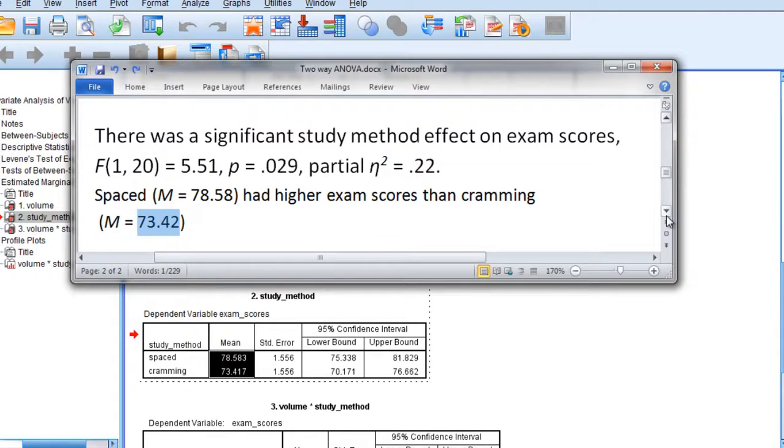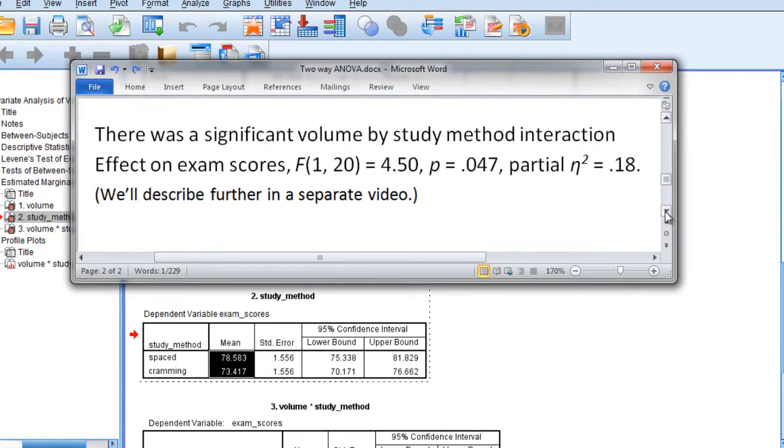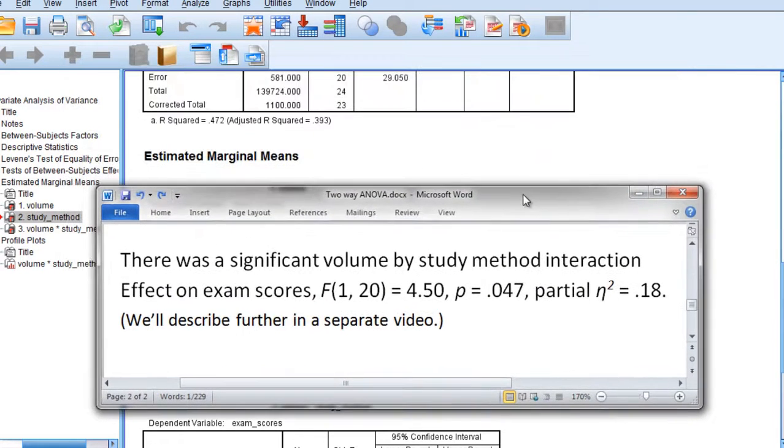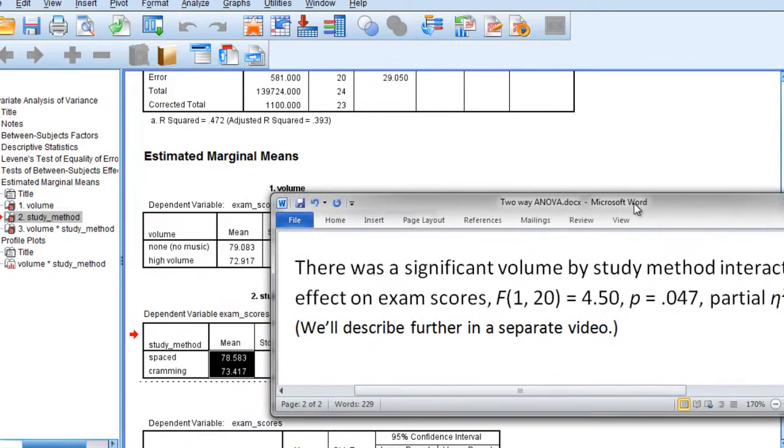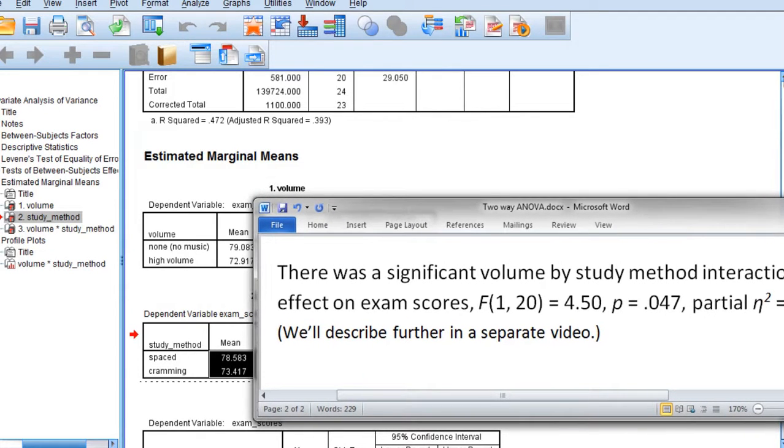And then finally, summarizing the interaction effect, we could say there was a significant volume by study method interaction effect on exam scores. F of 1, 20, 4.5, p is .047, with a partial eta-squared of .18.